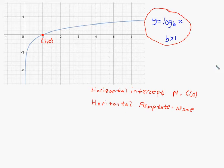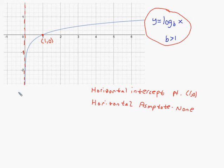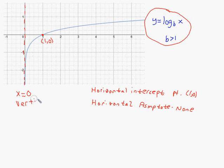Another fact for any equation of this form where b is bigger than 1 is that it has a vertical asymptote at the y-axis. The y-axis is a vertical line, and the equation for a vertical line is always x equals the number it passes through. This line passes through x equals 0, so the vertical asymptote has equation x equals 0. The graph looks nearly vertical there and approaches that line as x gets closer and closer to 0.